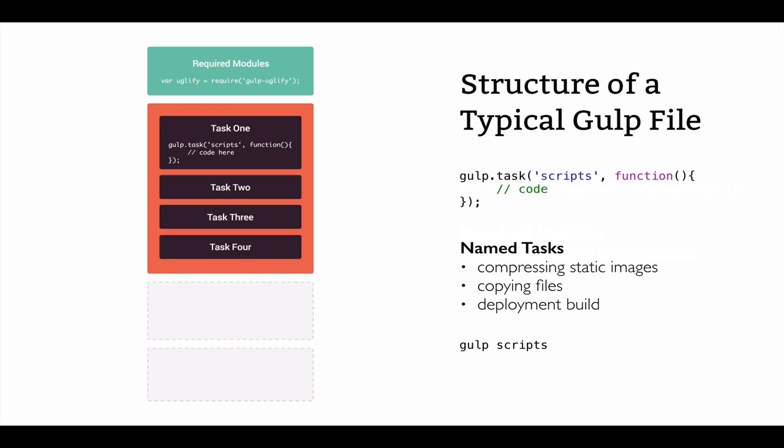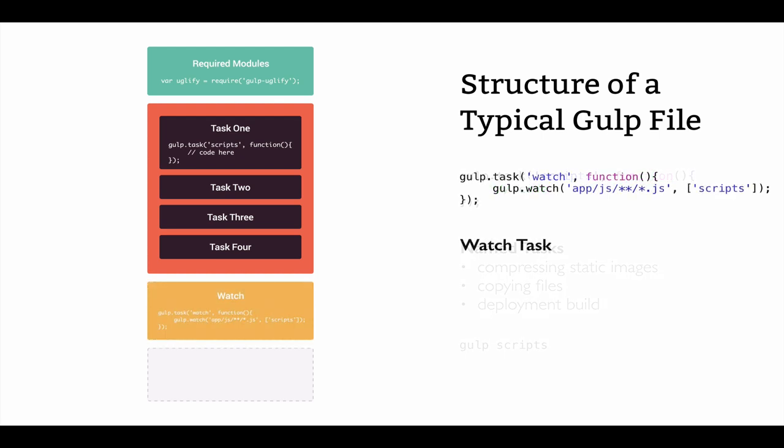We'll take a look at how we can run these named tasks when we start coding everything up in an upcoming video. One interesting thing to note: to run these named tasks, all you need to do is type the command 'gulp' along with the name of the task into your terminal. So in our case, to run the task we named 'scripts,' we would type the command 'gulp scripts'.